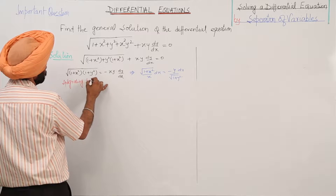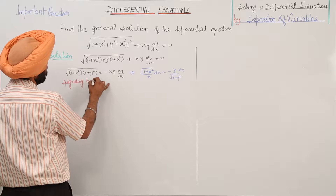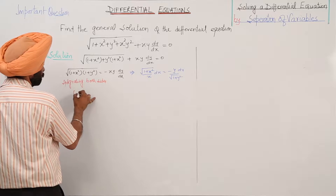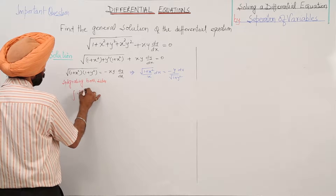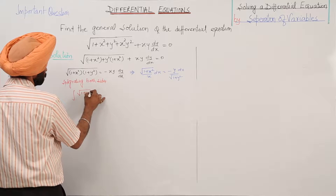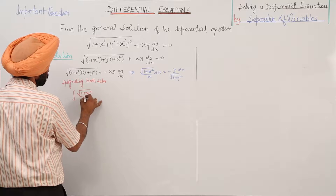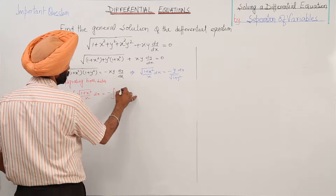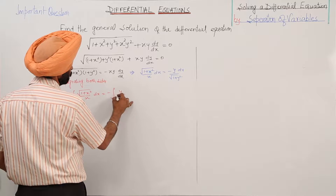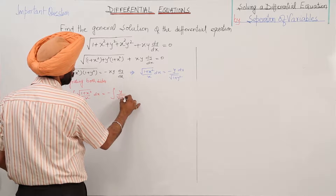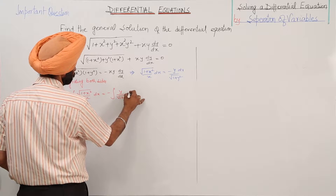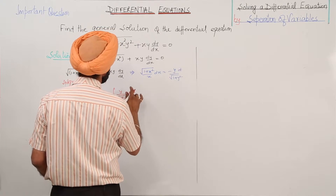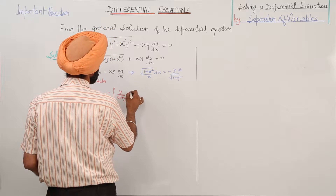Now integrating both sides: integration of square root of 1 plus x square upon x dx is equal to negative integration of y upon square root of 1 plus y square dy.